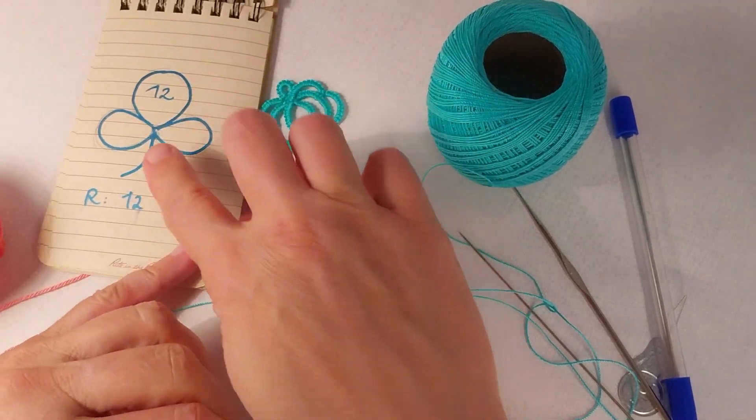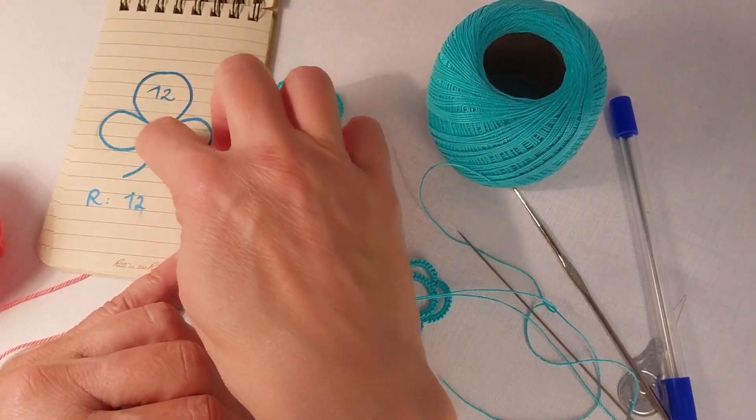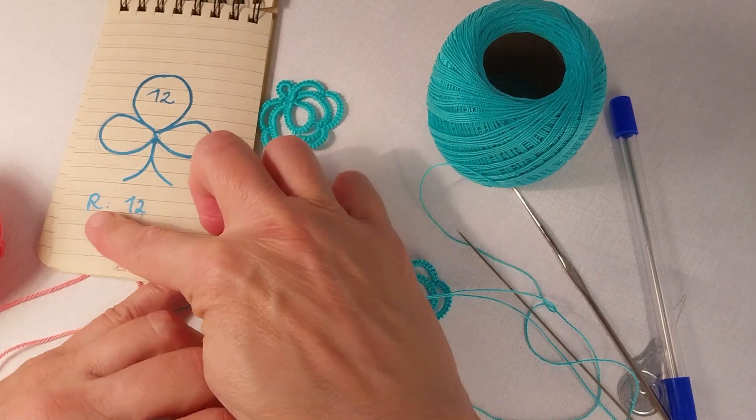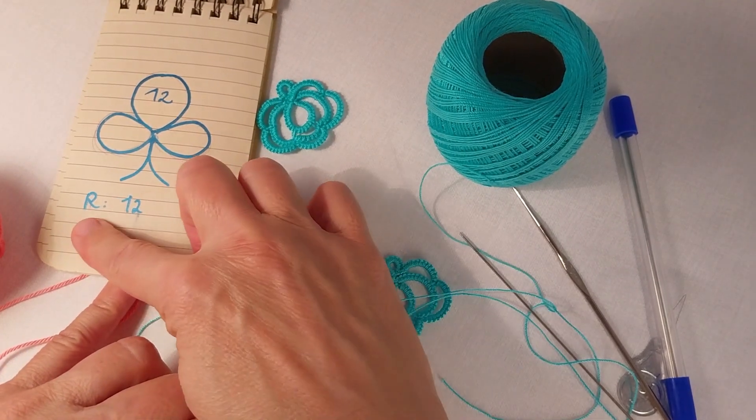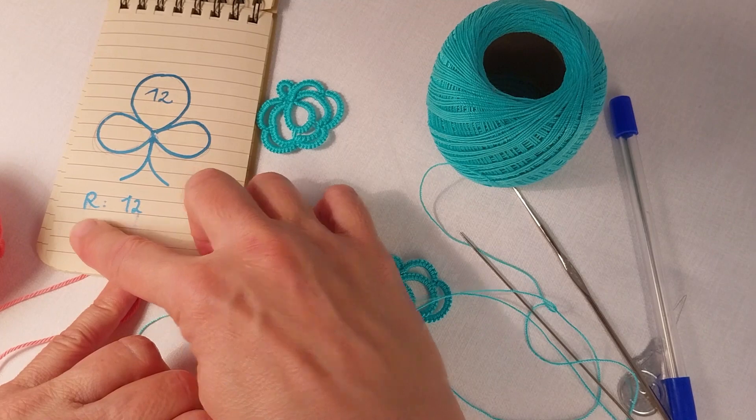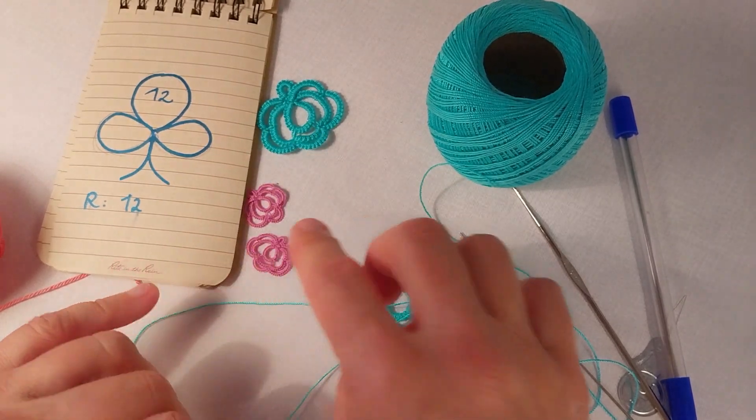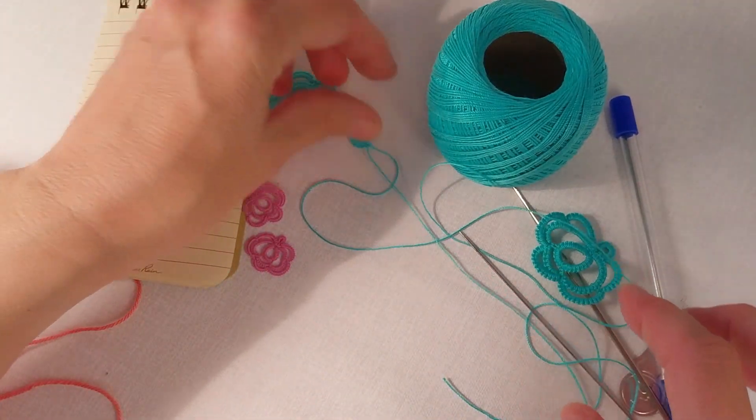If you see a pattern you're probably going to see these curves, these rings. If it's a written pattern it's supposed to be written just like ring 12 means 12 double stitches. Let's try it together.